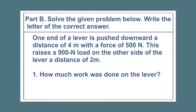Part B, solve the given problem below. Write the letter of the correct answer. One end of a lever is pushed downward at a distance of 4 meters with a force of 500 newtons. This raises a 900 newton load on the other side of the lever, a distance of 2 meters.